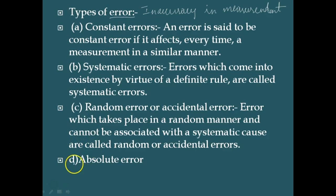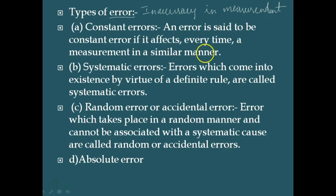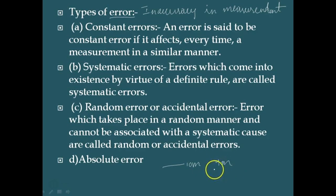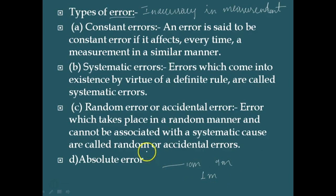The first type of error is constant error. An error is said to be a constant error if it affects every measurement in a similar manner. For example, if we are measuring 10 meters of length and every time we get 9 meters instead, the error introduced is always 1 meter — it is constant throughout the experiment. These kinds of errors are called constant errors.